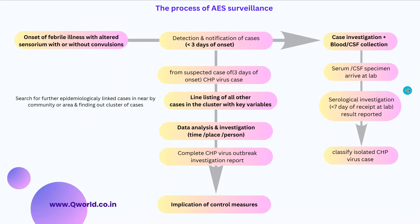For surveillance: when febrile illness with neurological features such as altered sensorium, with or without convulsions, is detected within three days of onset, notify and investigate these cases. Collect blood or CSF samples and send to the lab. If results are positive, classify as a Chandipura virus case. Line-list all probable cases with key variables and do data analysis in terms of time, place, and person. Complete the outbreak investigation report and implement control measures — both primary and secondary prevention as discussed.